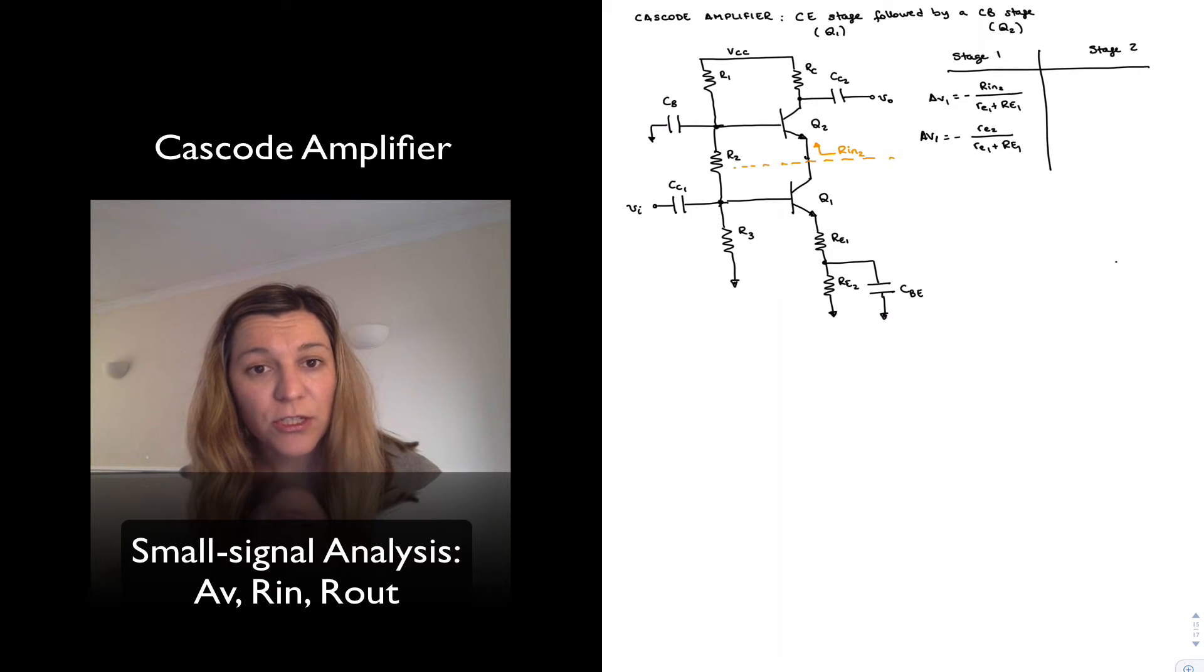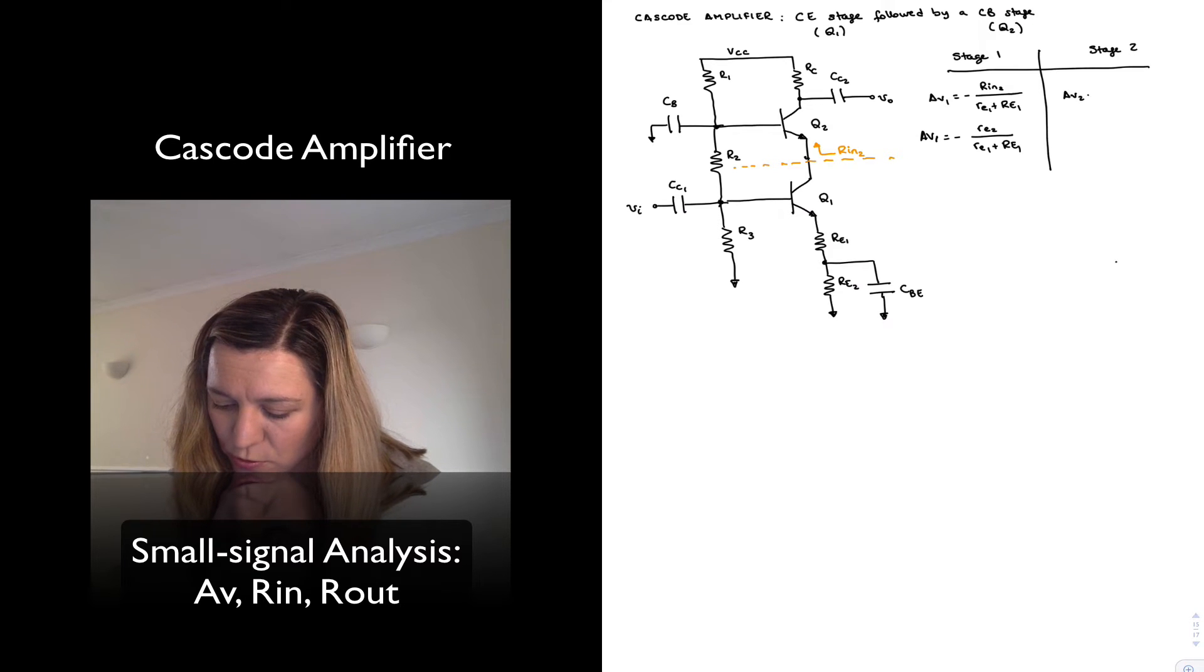And for the second stage, this is a common base amplifier. And so my gain AV2 is going to be equal to collector resistance Rc divided by little re2.